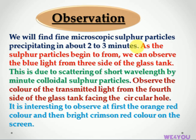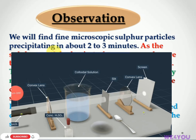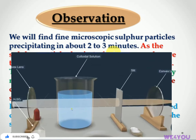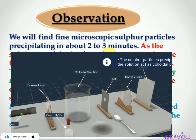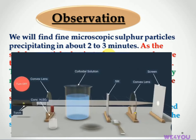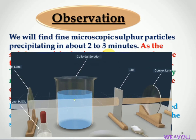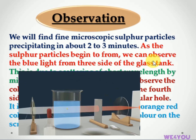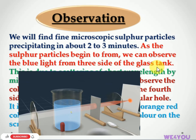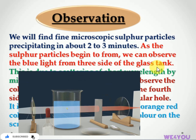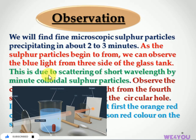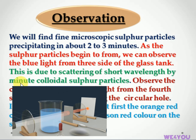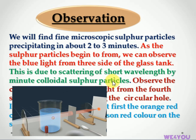We will find microscopic sulfur particles precipitating in about 2 to 3 minutes. These microscopic sulfur particles scatter light of short wavelengths.